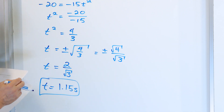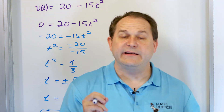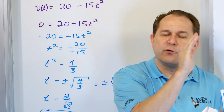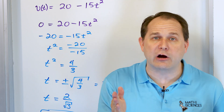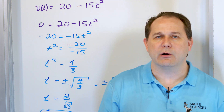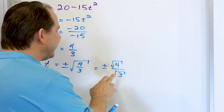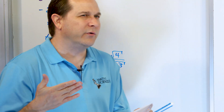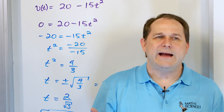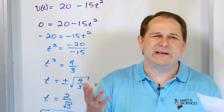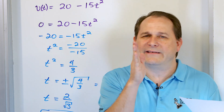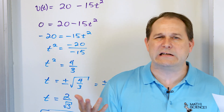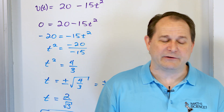So the answer to Part A is: the velocity of the particle is zero just over one second after the clock starts — at t ≈ 1.15 seconds. There is technically another answer at t = -1.15 seconds, where the velocity is also zero, but we don't really care about things that happen before the experiment starts.